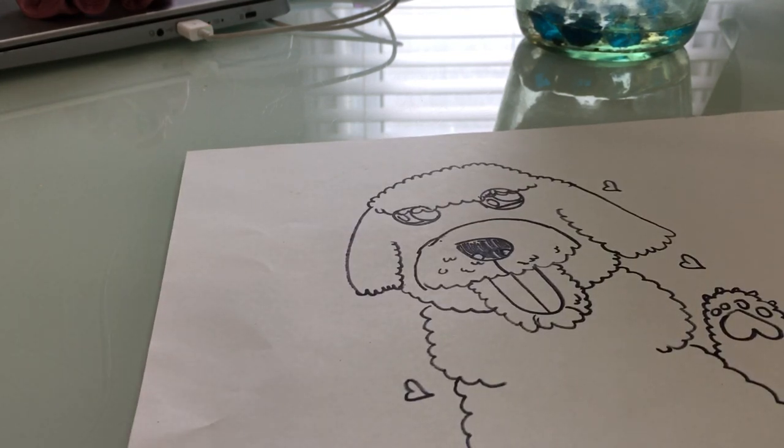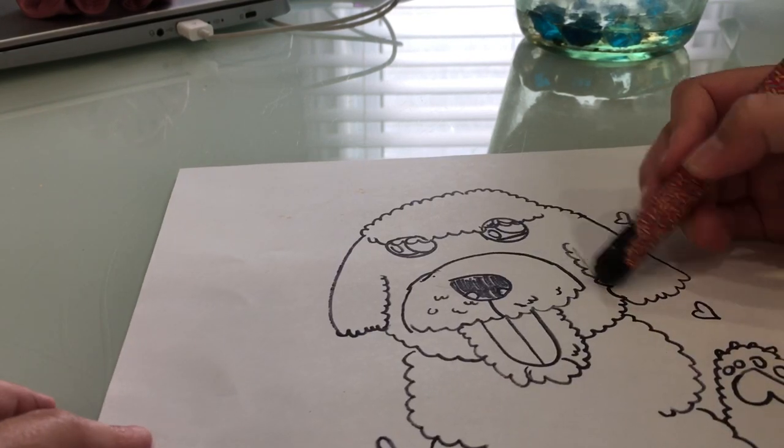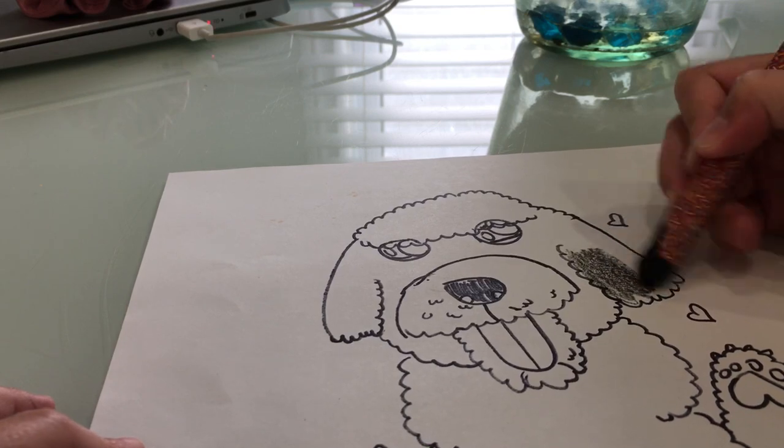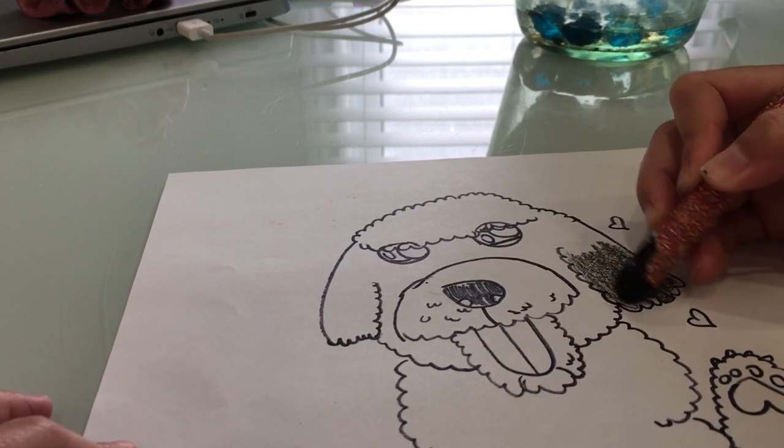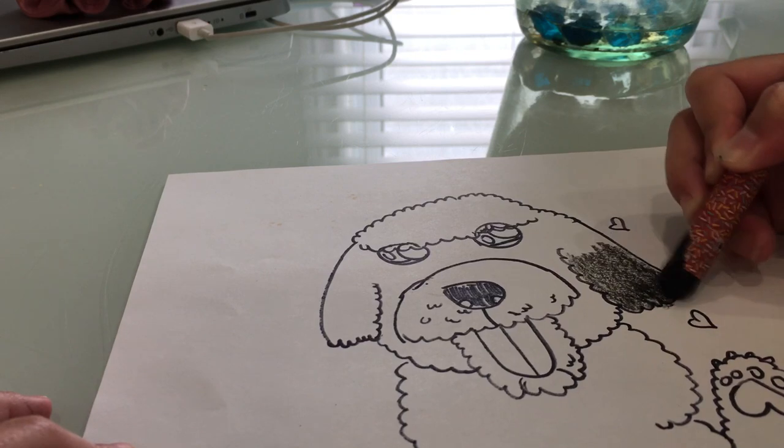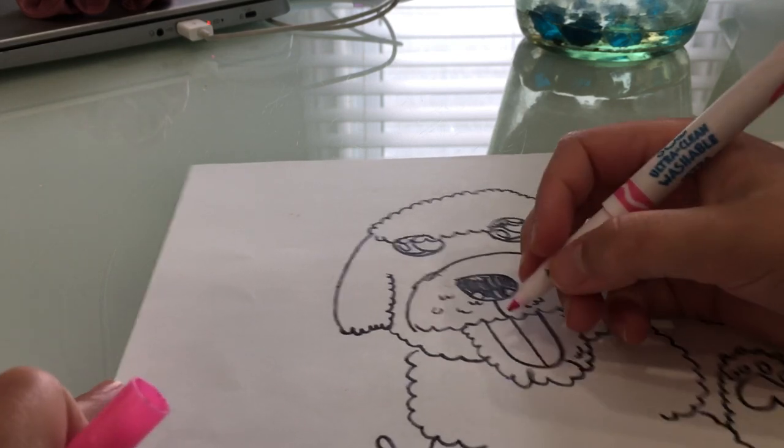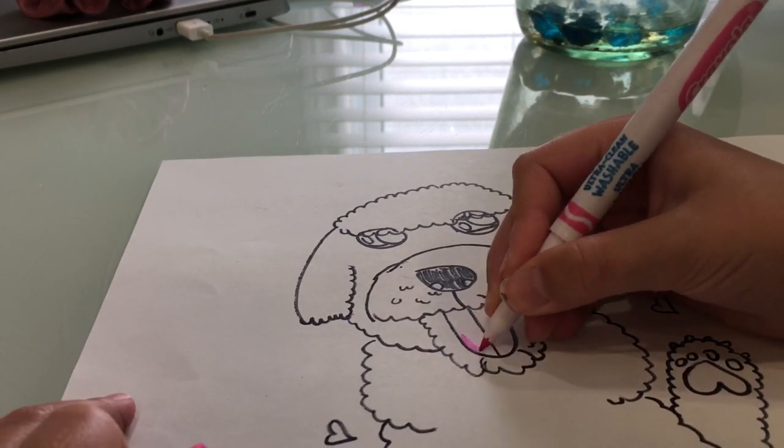You can color it. If you have a dog similar to Luca and you want to do him or her instead, you can color it another color. But, as always, we're going to color Luca black. And I'm not going to color the whole thing because this video is going to take like 10 minutes. And the tongue is pink.